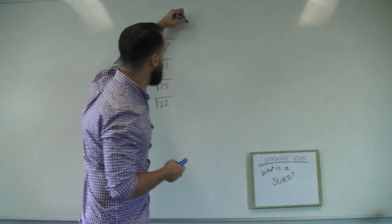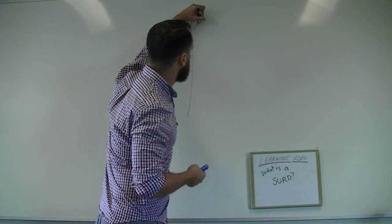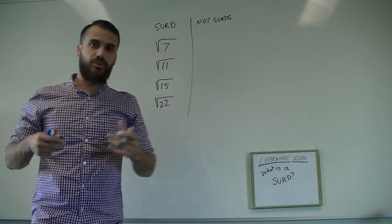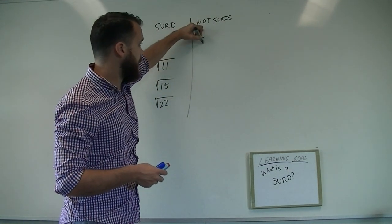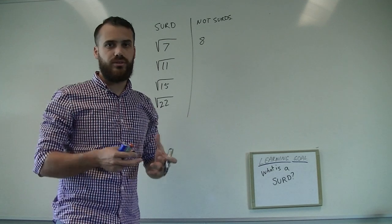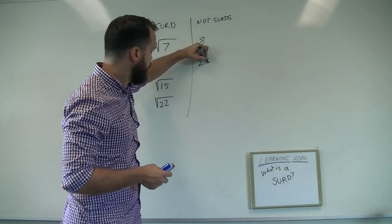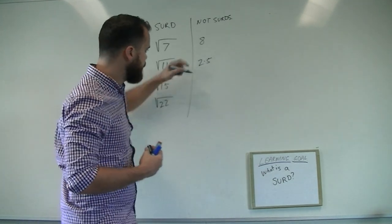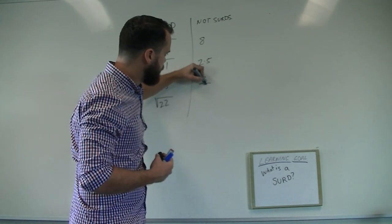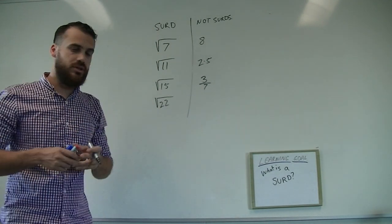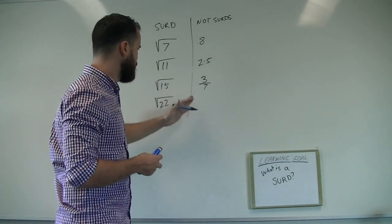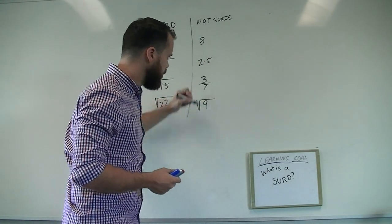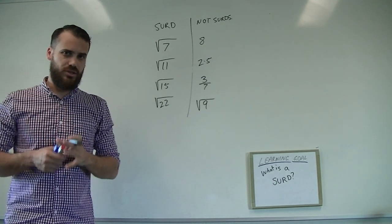Let's take a look at some things that are not SURDs. Really simple one — the number 8. 8 is not a SURD. 2.5 is not a SURD. 3.7 is not a SURD. And finally, a really interesting one — the square root of 9 is not a SURD.